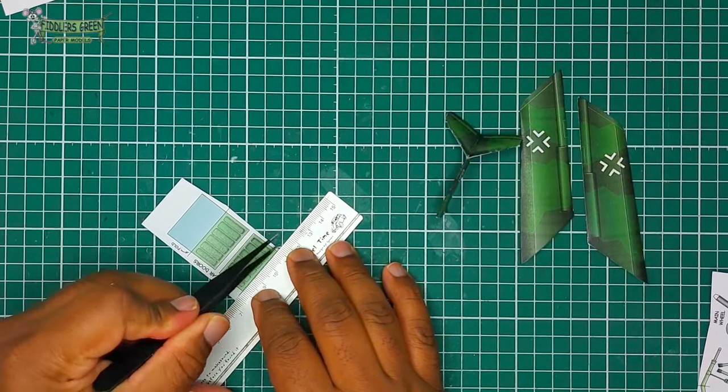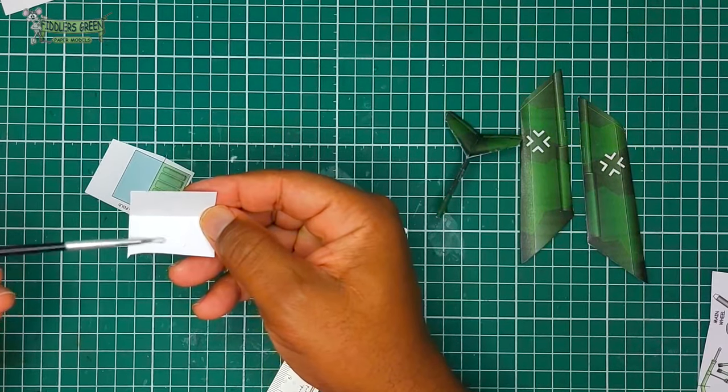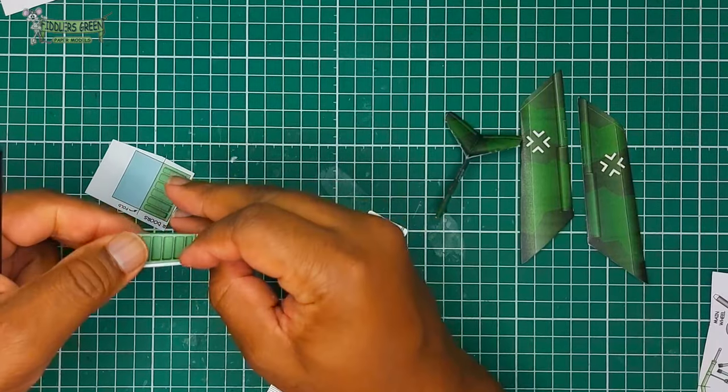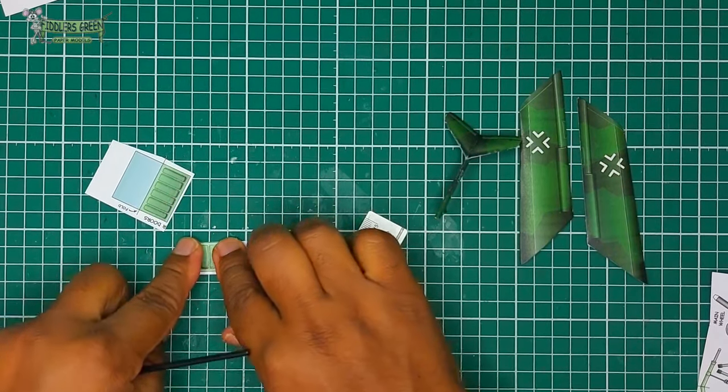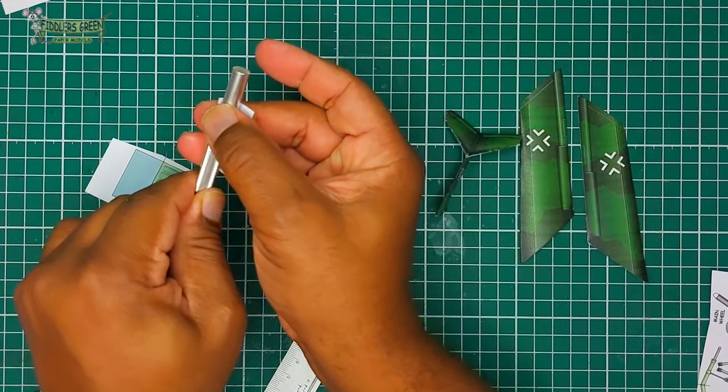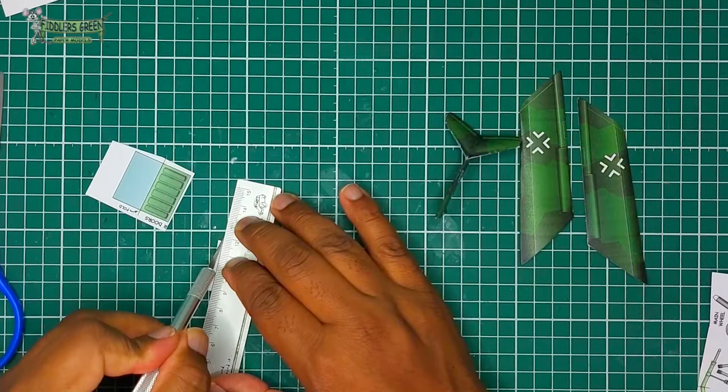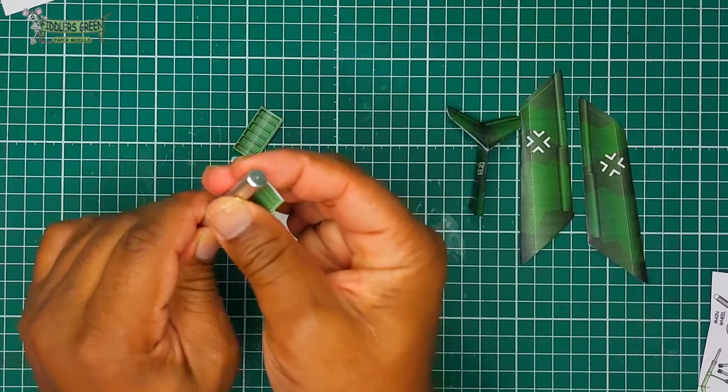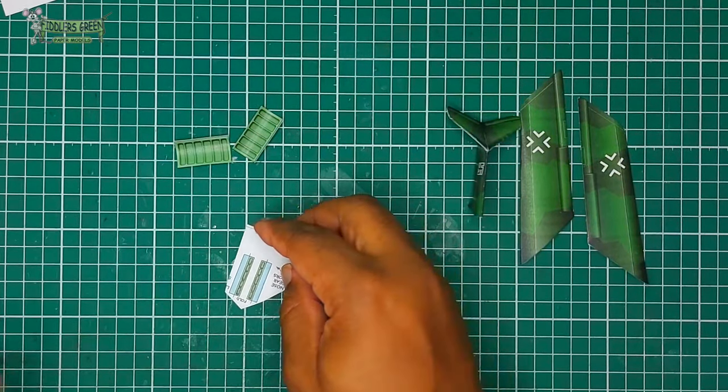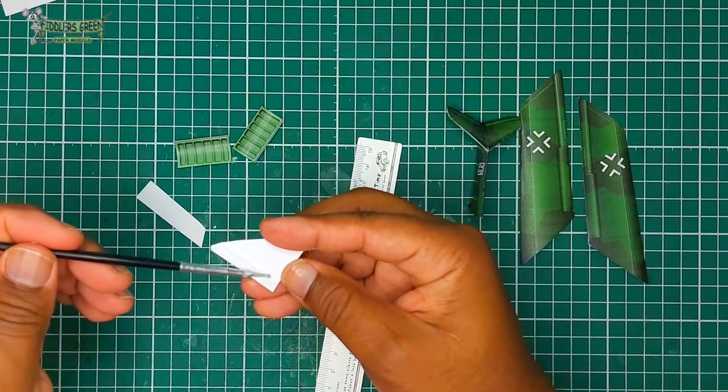And now we are on to the landing gear door. Simple fold. Now watch what I'm going to do with my knife handle blade. You see I put that curve in there. That is to simulate the curve of the fuselage itself. So don't forget to add that curve to your model. And those are the nose gear landing doors.